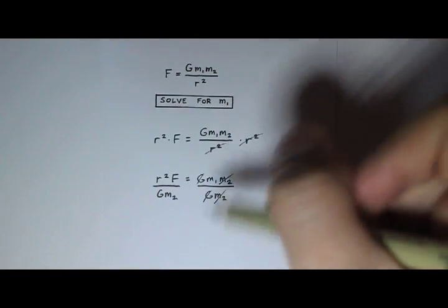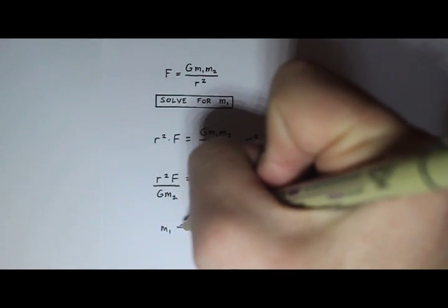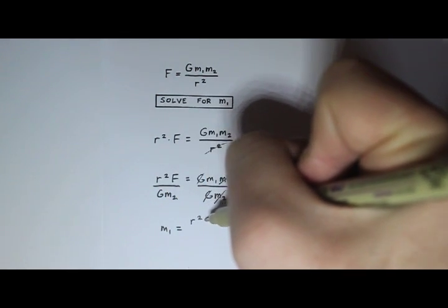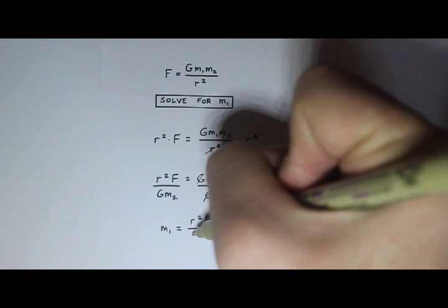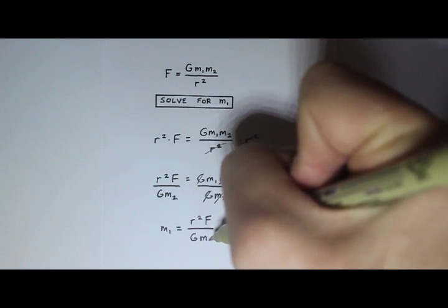the m2's cancel, and I'm left with m1 equals r squared F divided by G times m2.